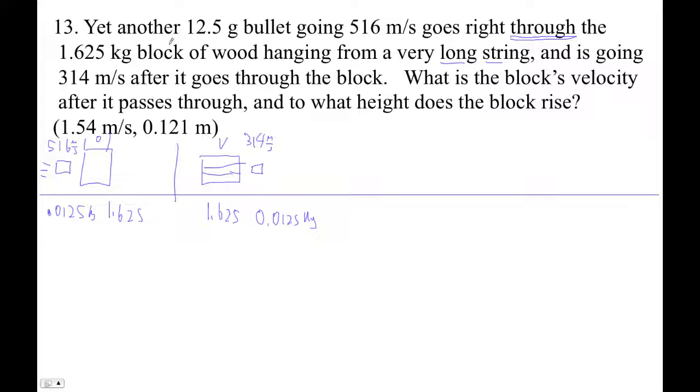So just dividing that by 1,000. This one's already kilograms, so we're set. And then the block of wood here is moving, and then here it's going to swing up to some height. And the bullet will be still moving along this way.